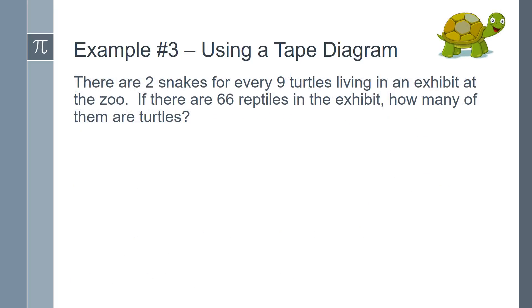Example number 3. There are 2 snakes for every 9 turtles living in an exhibit at the zoo. If there are 66 reptiles in the exhibit, how many of them are turtles?